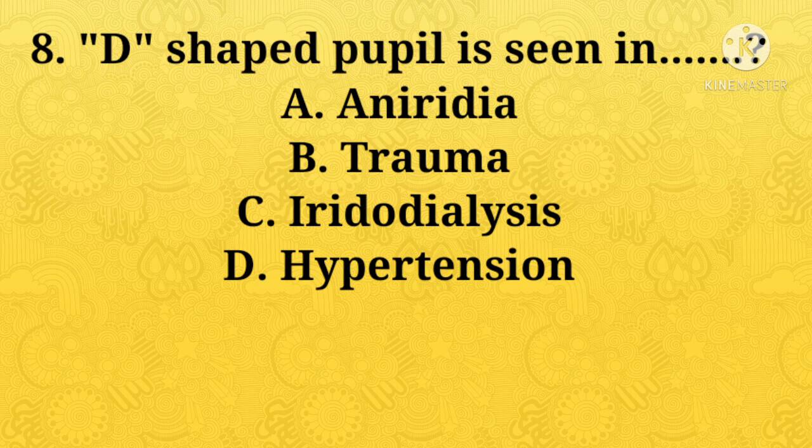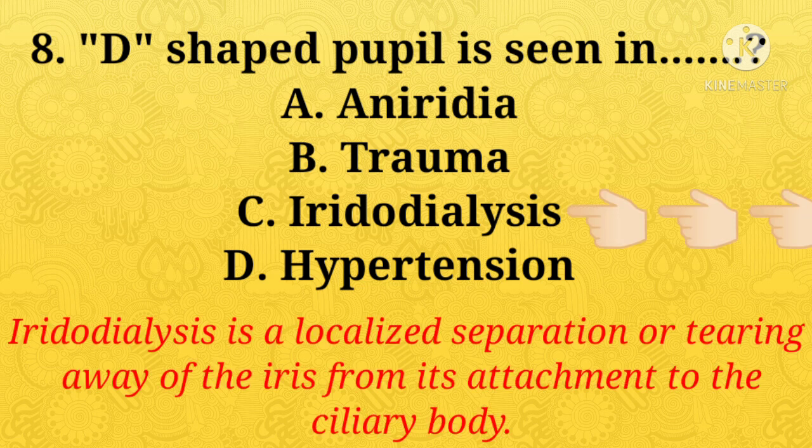D-shaped pupil is seen in — A: aniridia, B: trauma, C: iridodialysis, D: hypertension. Option C, iridodialysis, is the right answer. Iridodialysis is a localized separation or tearing away of the iris from its attachment to the ciliary body.